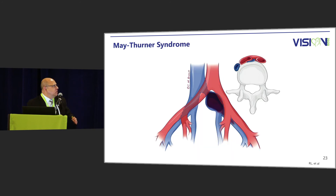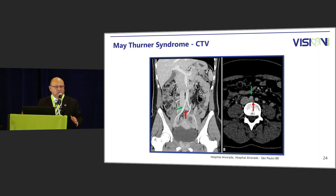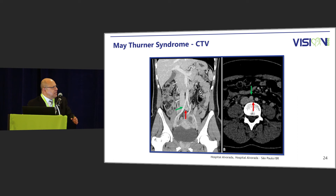Moving on to May-Thurner syndrome — the classic description is the right common iliac artery compressing the left common iliac vein against the L3 or L4 vertebral body. A coronal CT demonstrates the anatomy of the aorta and cava, and on the axial views the red arrow demonstrates the tiny vein being compressed.